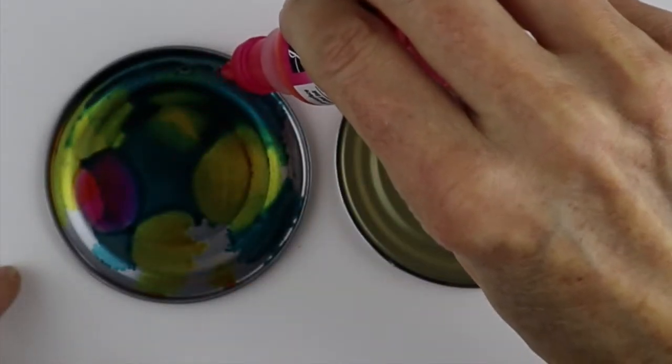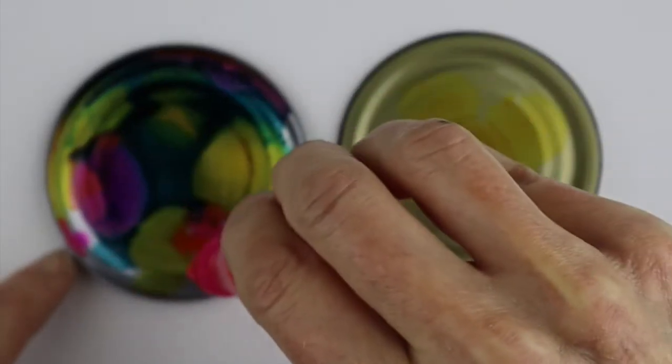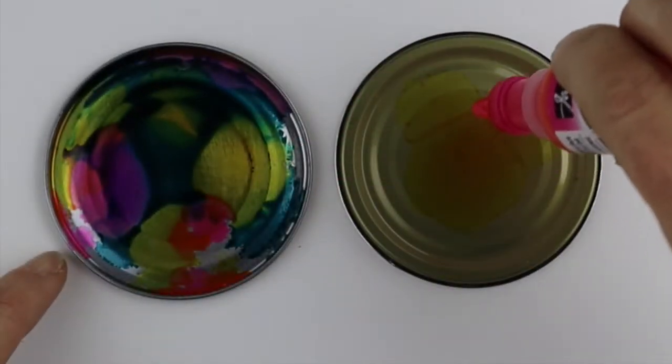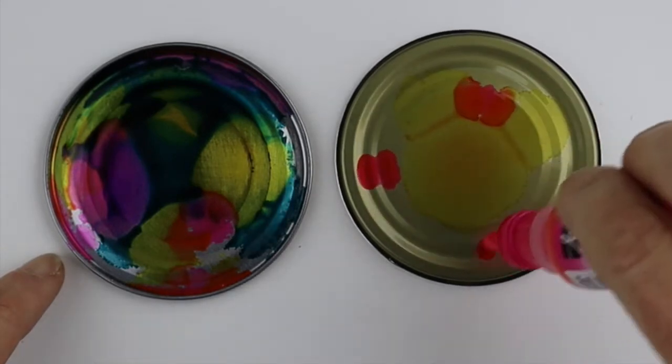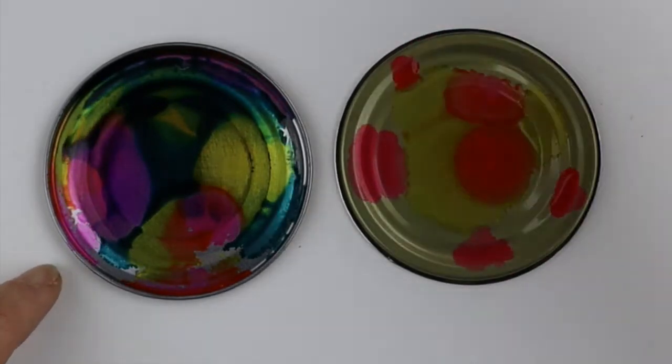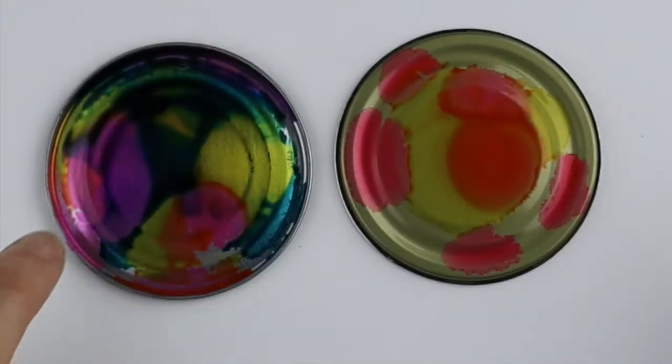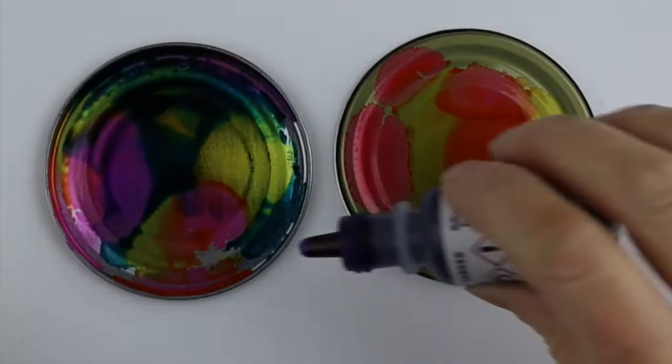It'll take a little while to dry, but you just want to get the colors on and see what happens. We just want it to be really abstract, so don't worry too much about perfection. When they overlap they create different colors as well, so this one's quite a dark purple.